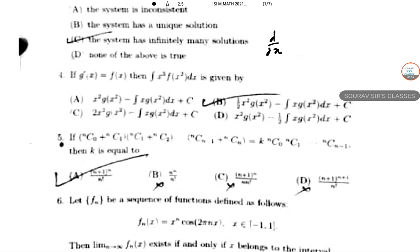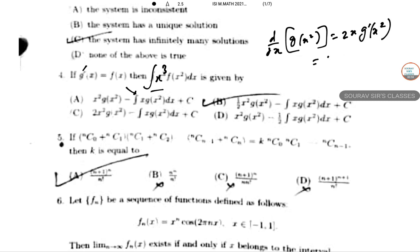This is ISI M.Math question number 4. Given that g'(x) = f(x), find the integral from p to q of f(x squared) dx. Options are provided. Let's start by finding d/dx of g(x squared), which equals 2x · g'(x squared) = 2x · f(x squared). This will be needed for integration.